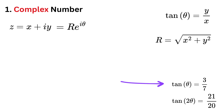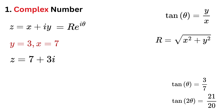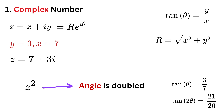So if we are told that tan of theta is 3 over 7, we can take that as our y over x, meaning y is 3 and x is 7. Thus we take z as 7 plus 3i. Now here comes the trick: when we square this complex number, the angle gets doubled.